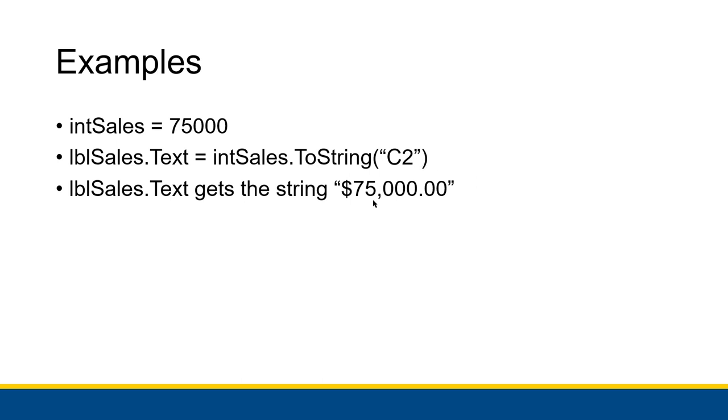Use the dollar sign and the comma every three digits, but also the two says round it to two decimal points. Even if there aren't any real digits out there, just put two zeros at the end. So int sales.toString passing in C2, all of this gets replaced by the string containing $75,000.00 formatted properly. Then because we essentially have labelsales.text equals $75,000, that string gets put inside the text property and displayed to the user.